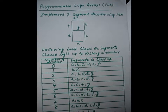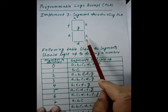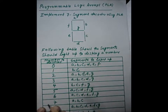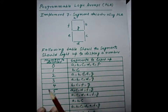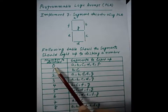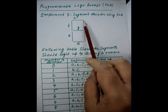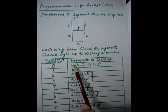We will discuss a seven segment decoder using PLA. This is a seven segment display, and we know that the seven segment display has LEDs named A, B, C, D, E, F, and G. With these LEDs we have to display digits from 0 to 9. Our first task is to find out, for displaying each digit 0 to 9, which LEDs should glow.